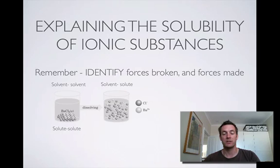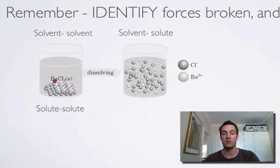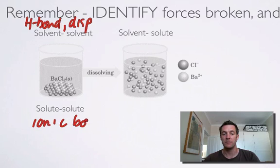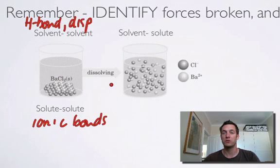Moving on — I'm trying to get one of those solubility explanations going again. We're going to identify the forces broken and the forces made, looking at this diagram of barium chloride dissolving in water. The solvent-solvent forces are between water molecules, so they're hydrogen bonds and dispersion forces. The solute-solute forces are ionic bonds, because we've got an ionic lattice — and we should spot almost straight away that these are very strong. Hydrogen bonds are not nearly as strong as ionic bonds, but there are some very strong forces to break. The solvent-solute forces we make are precisely these ion-dipole forces.